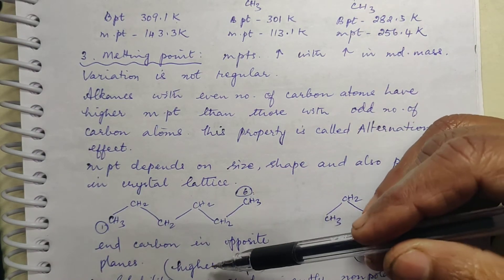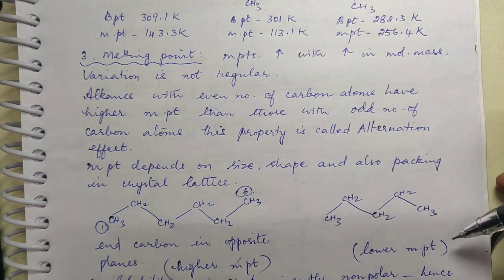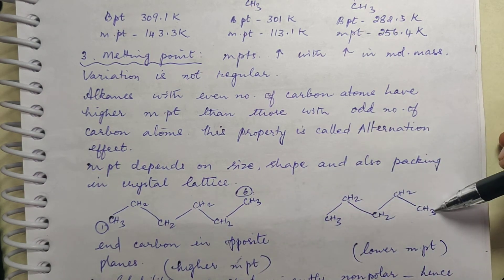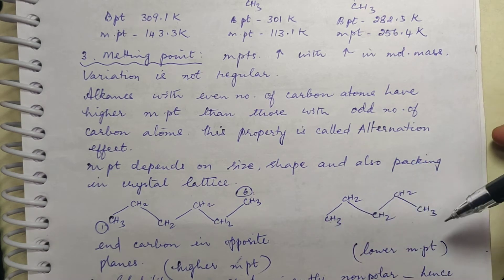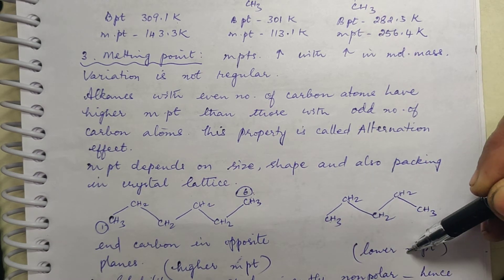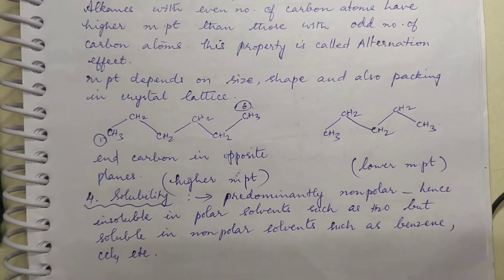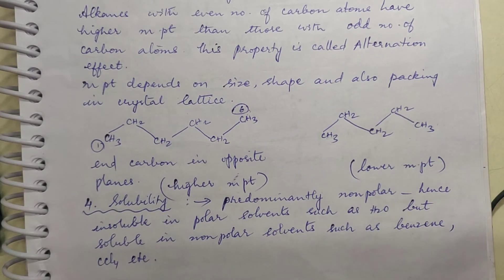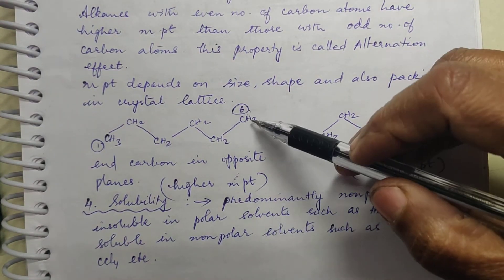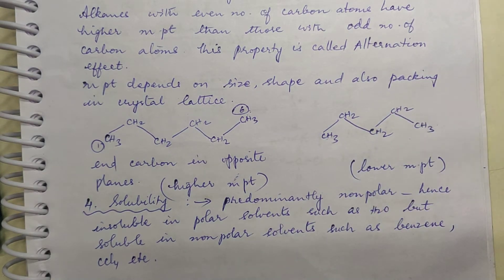When end carbons are in opposite planes, the crystal lattice is stronger and melting point is higher. When they are in the same plane, there are more repulsive forces and the melting point is lower. So melting point is higher for alkanes having an even number of carbon atoms than for those with an odd number.